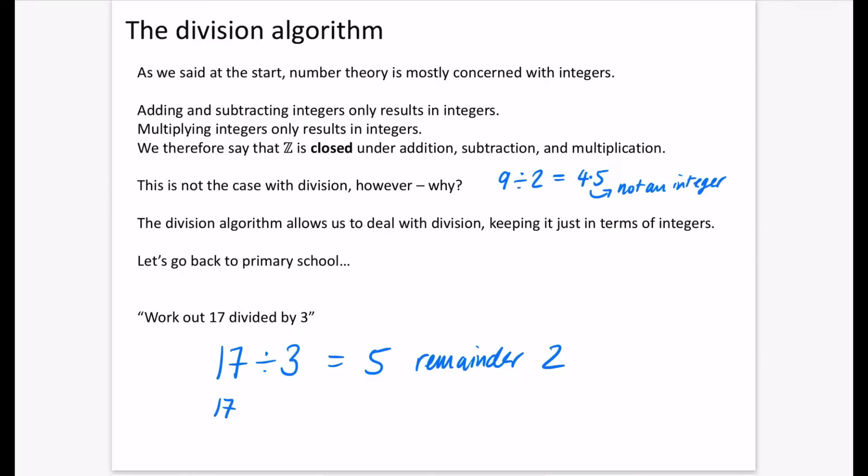And then if we go a little bit further and we stop being in primary school and we now start thinking about improper fractions, maybe you do this in primary school as well, we would think about writing this as 5 and 2 thirds. Or we could think about this as saying that 17 divided by 3 is 5 plus 2 thirds. So it's not written as a mixed number, we've got it as an integer being added to a fraction. And this concept is our way of trying to keep it in the realm of integers, like this first line that we've got here.